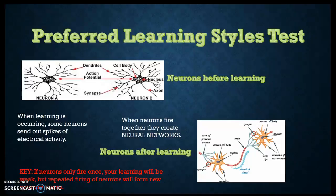As we look at our brain, there are cell bodies called neurons that are actually responsible for our learning. The first picture shows our neurons before learning — they're just separate bodies. When we have a learning experience, we have electrical fires between these neurons that create connections. If your neurons fire just once, your learning will be weak, but through repetitive firing of neurons, you will form new memory traces, and that's when you really develop deep, lasting learning.